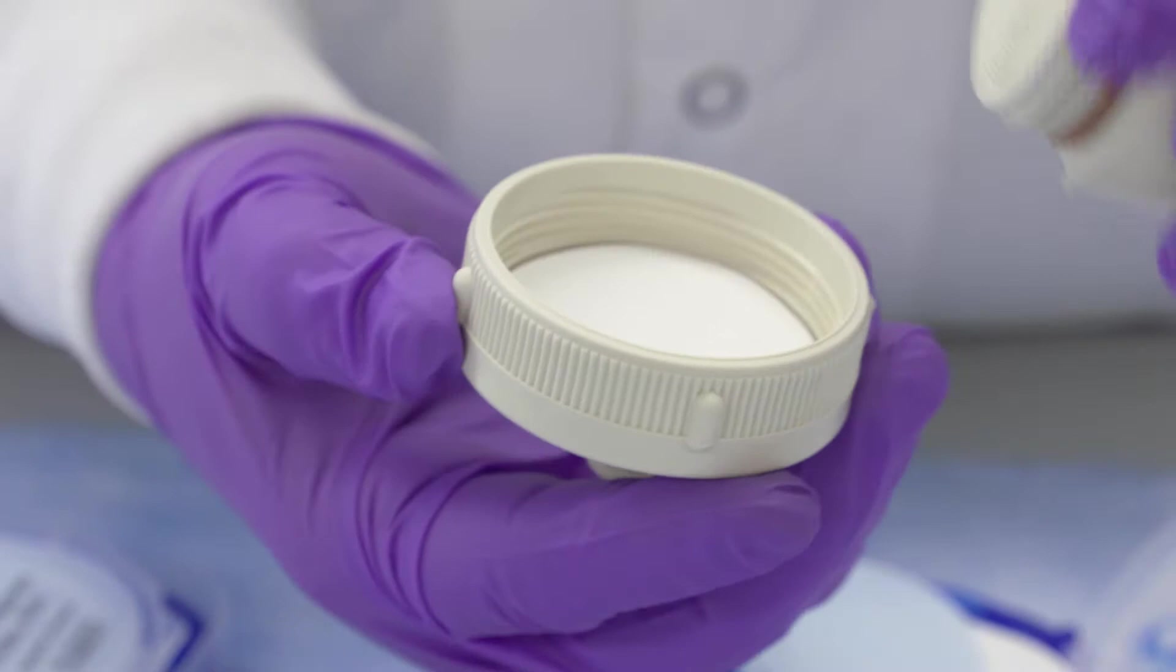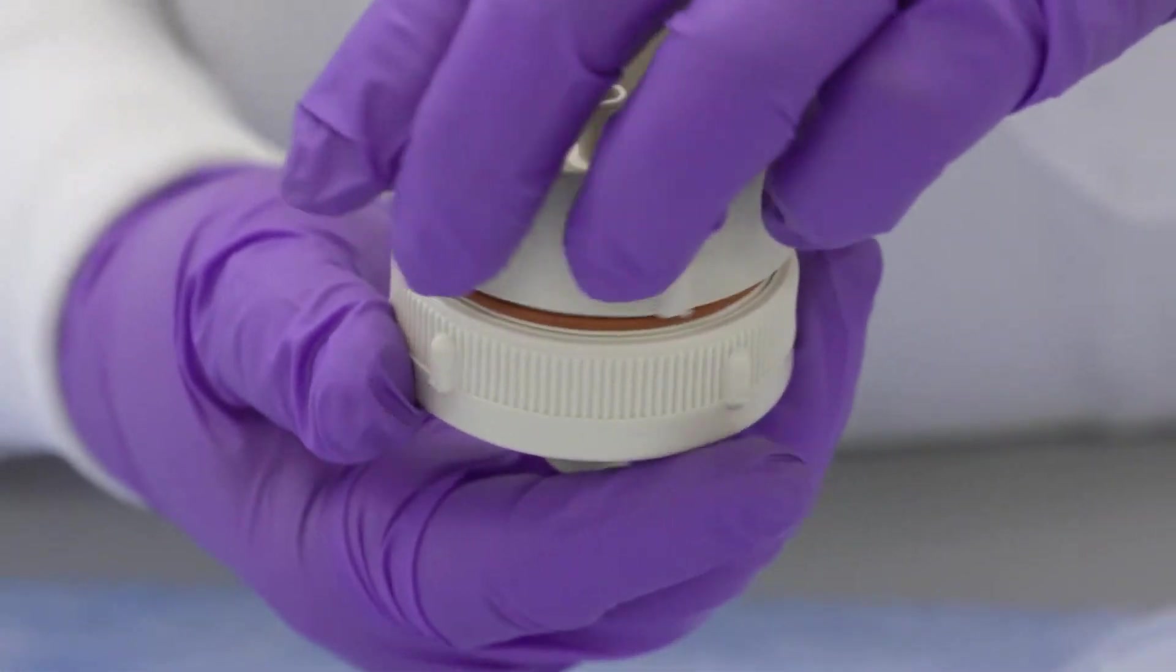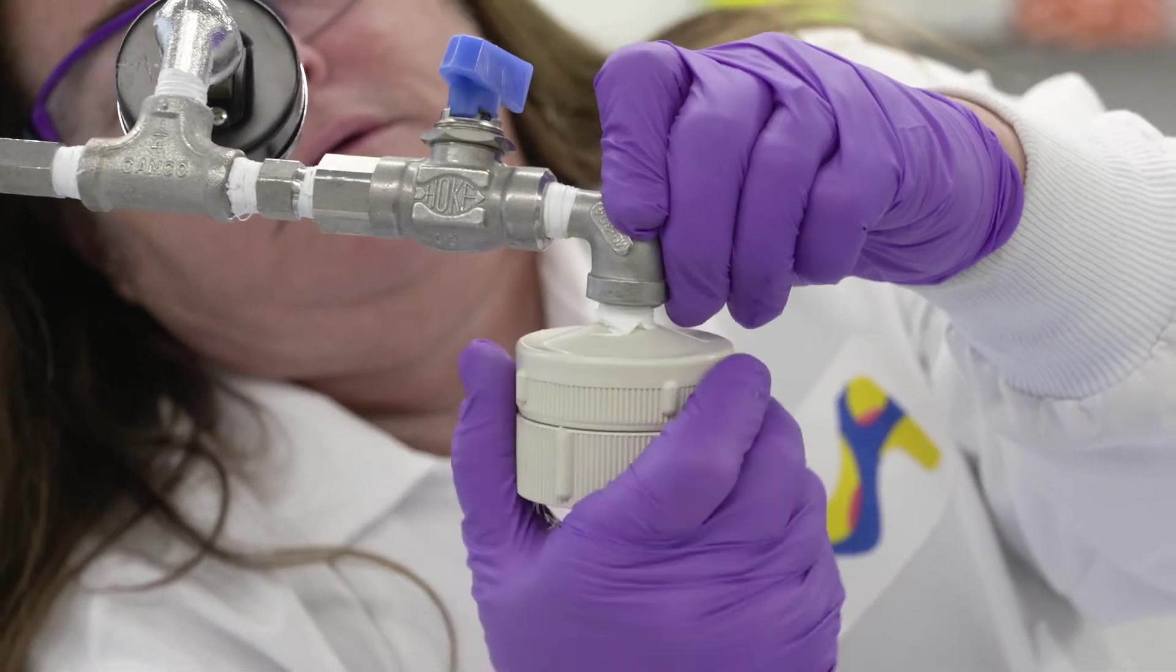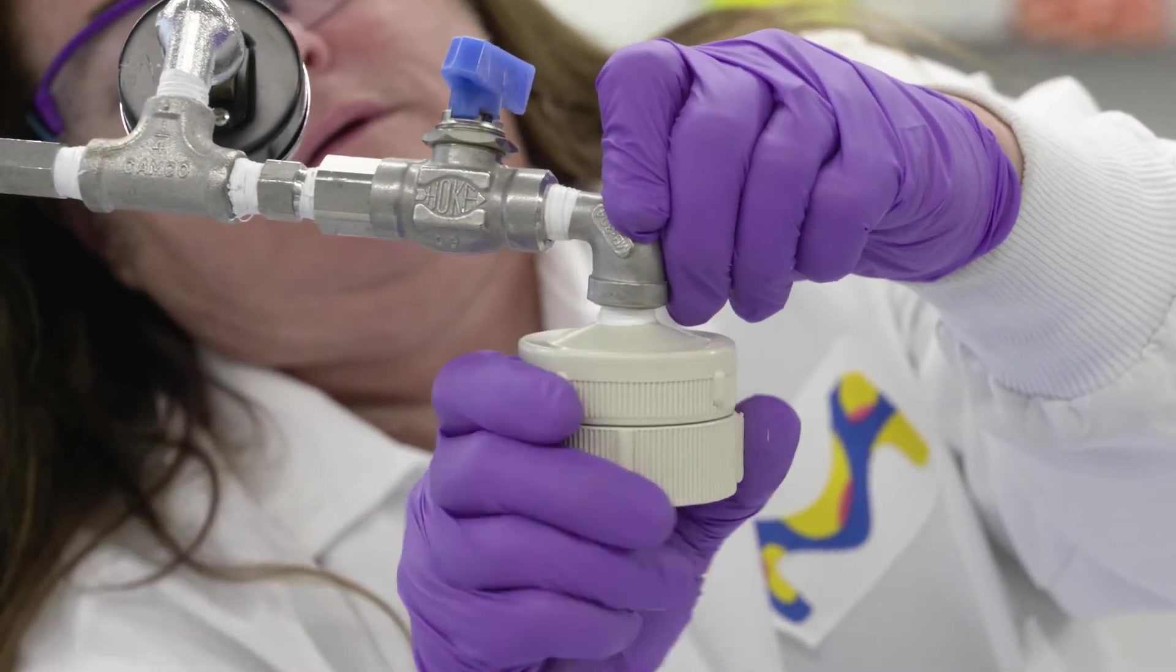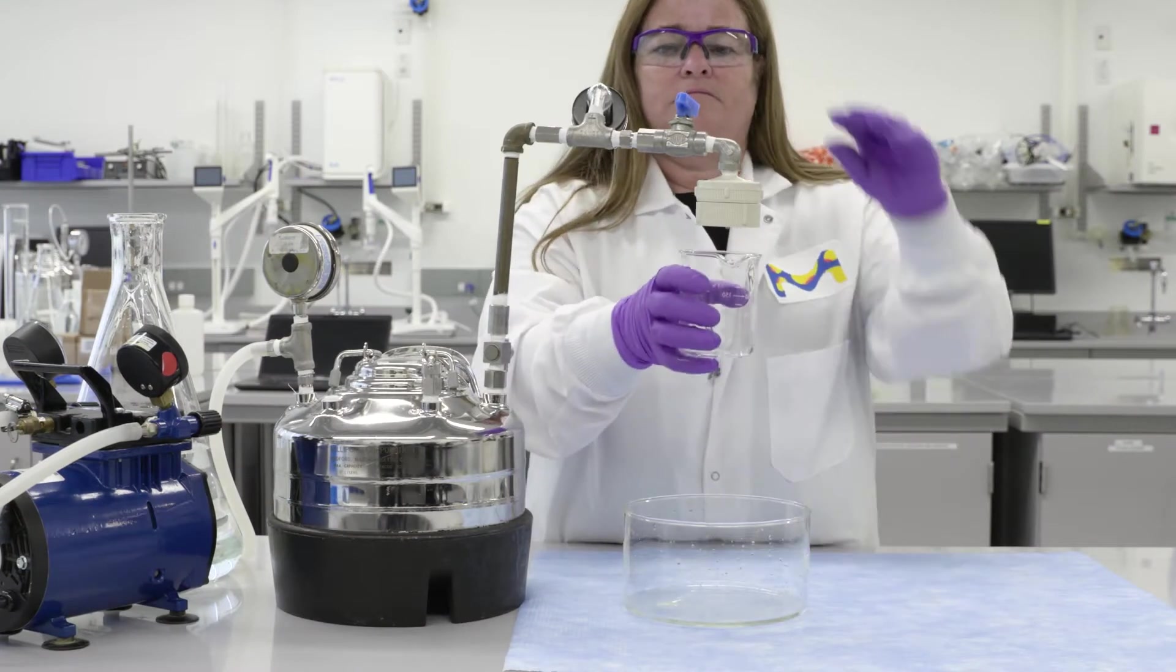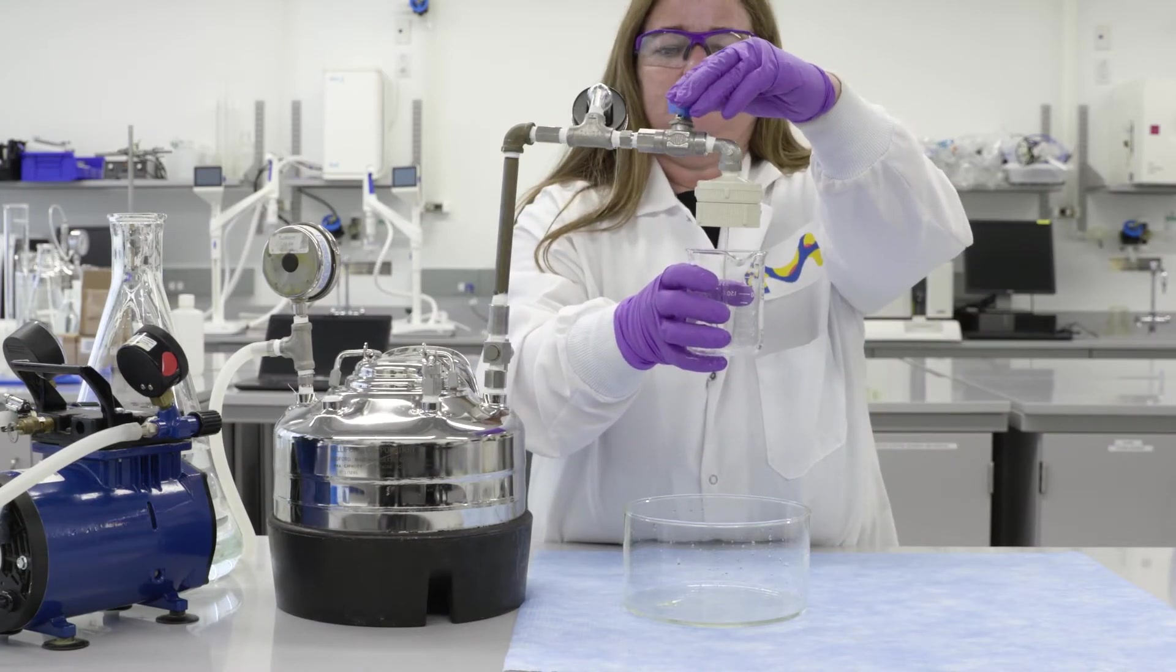For sterile filtration, Swinex filter holders can be autoclaved with the membrane in place. You can also connect a Swinex 47 millimeter filter holder with tubing to a pressurized reservoir or automatic filling machine for inline filtering of larger volumes.